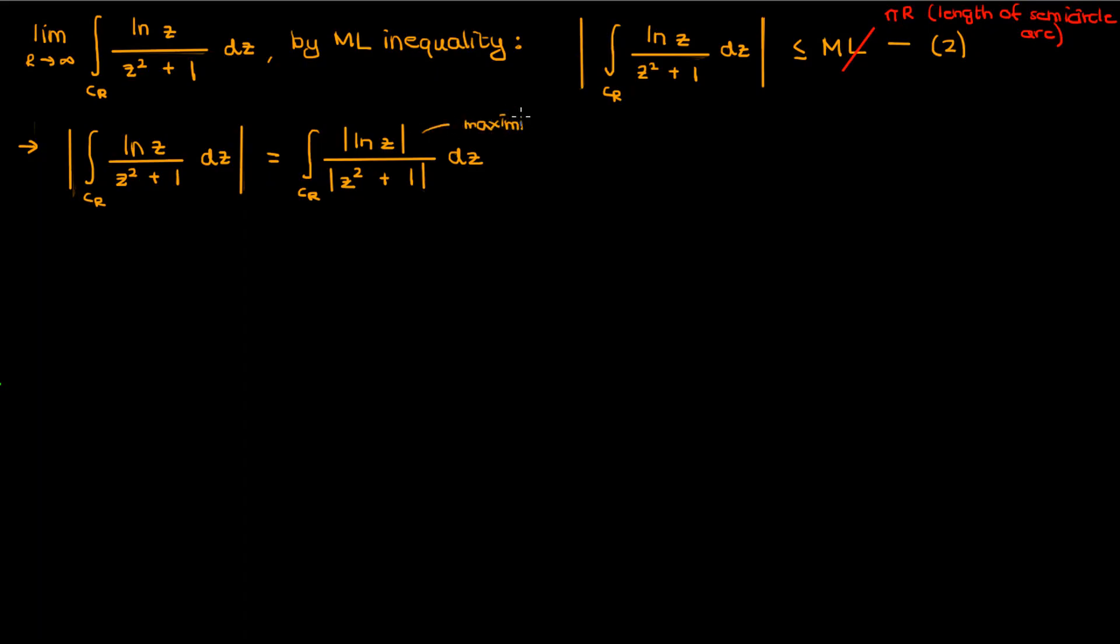Well I can find the maximum possible value of the numerator and the minimum possible value of the denominator. If I expand out the numerator using the definition of natural log, here's what I'll get. Now the magnitude of the sums of the ln of the modulus of z plus i times the argument of z, this magnitude is less than the sum of the individual magnitudes per the triangle inequality of complex numbers. Now on the contour C sub r, the modulus of z is just r. In addition, the maximum possible value of arg z on this contour is pi, which is the left end of the C_R contour. The i goes away because its magnitude is just 1. Therefore the maximum possible value of the numerator is just ln r plus pi.